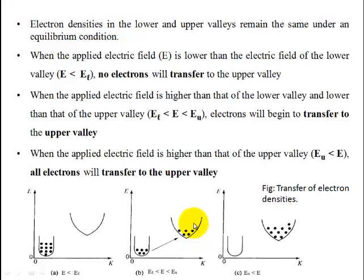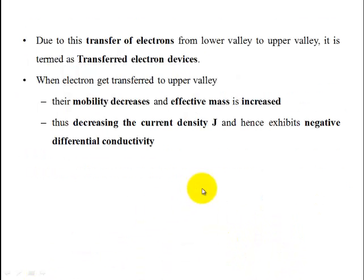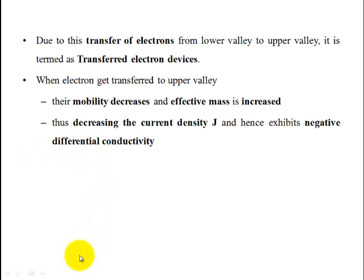When the electric field increases such that E_L < E < E_U, electrons continue transferring between valleys. When the electric field exceeds the upper valley threshold E_U, all lower valley electrons transfer completely to the upper valley. Since the upper valley has low mobility, the current density decreases — this exhibits negative differential conductivity, i.e., negative differential resistance.